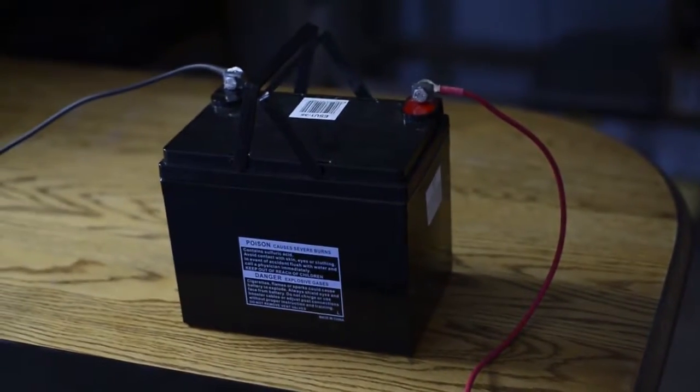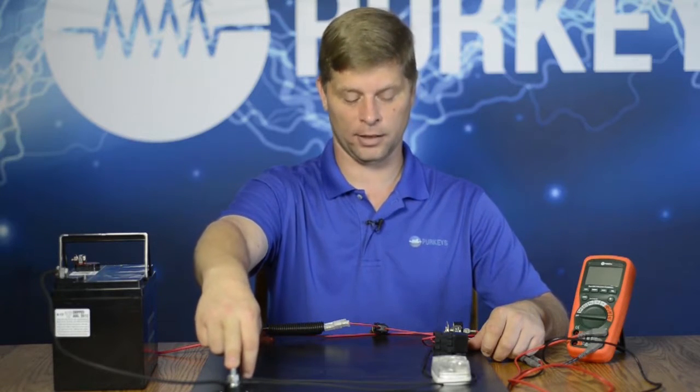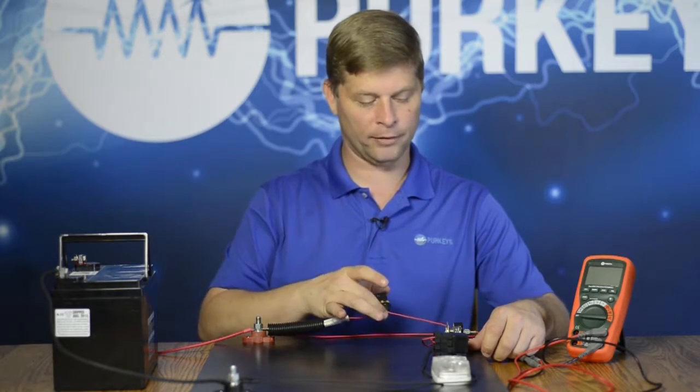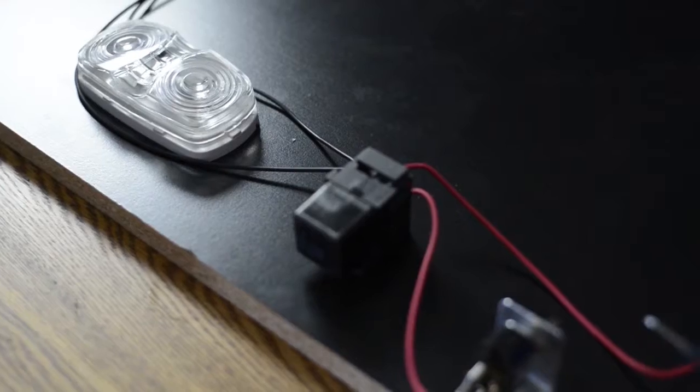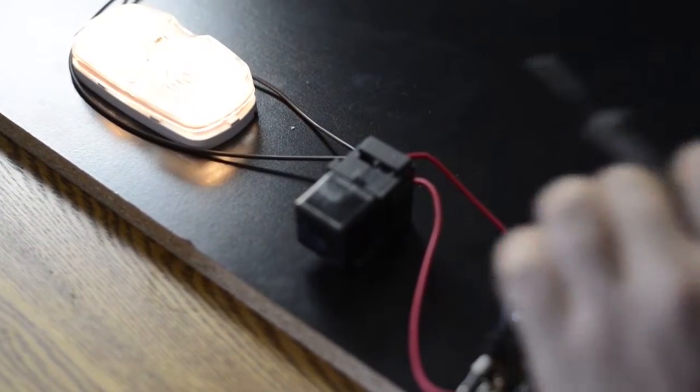We have our 12-volt battery that powers up our training board. We have a couple of simple junction points here so we can easily read voltage. We have an inline fuse, we have a relay, and we're going to use this relay to turn an incandescent light bulb off and on.